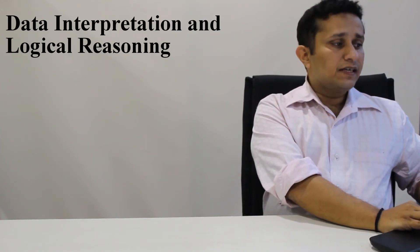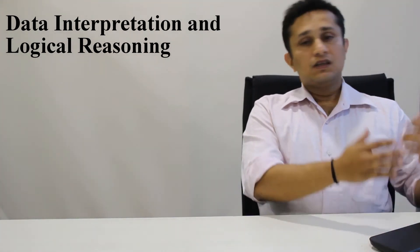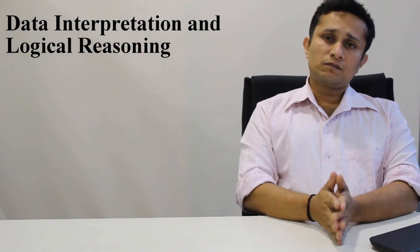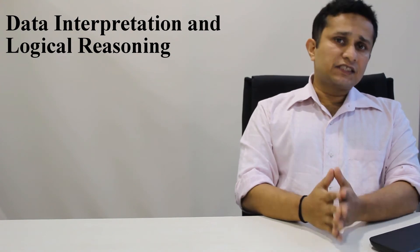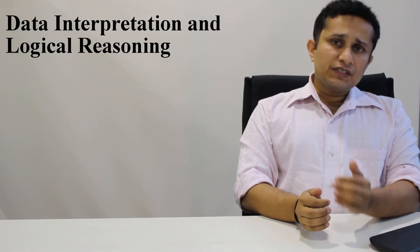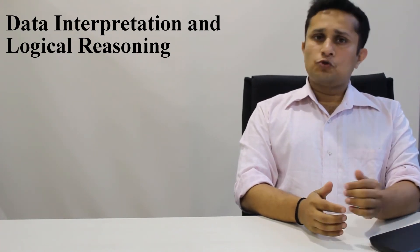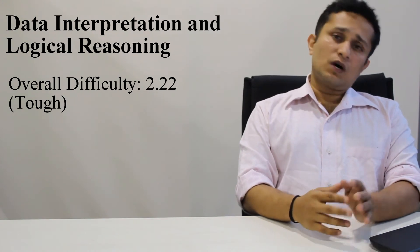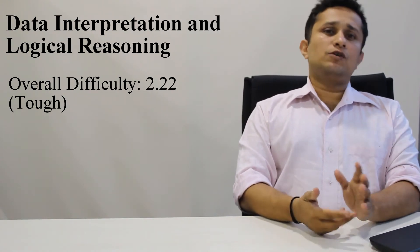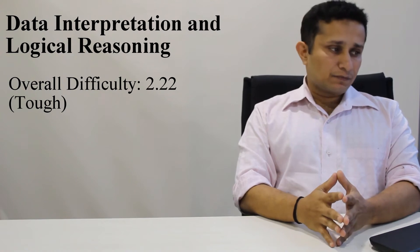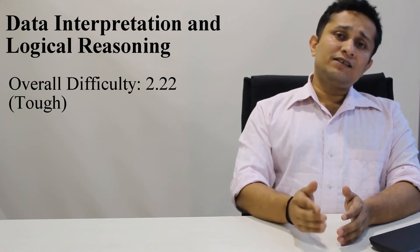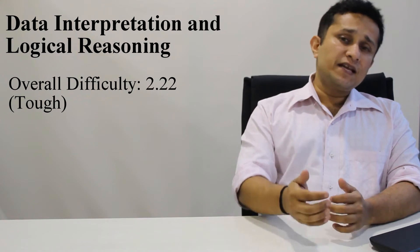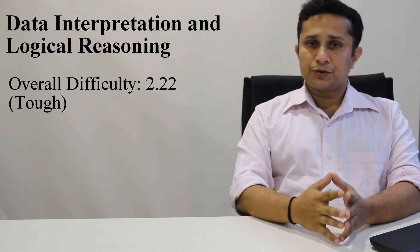Let's now look at the section that people fear the most, that's the DILR section. Typically toughest within the exam, toughest here as well. How was the section here? Here the average difficulty level was 2.22, so close to 2.2. Again, very similar to what you would face in the actual exam. So broadly, this was again a section that replicated the actual exam scenario.